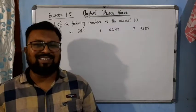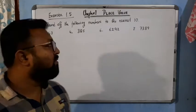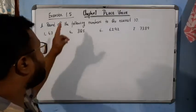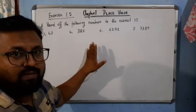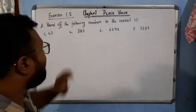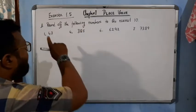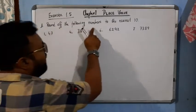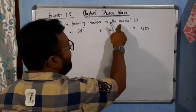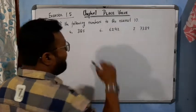Hello students. Now we come to the last exercise of this chapter: rounding off. Round off the following numbers to the nearest ten.